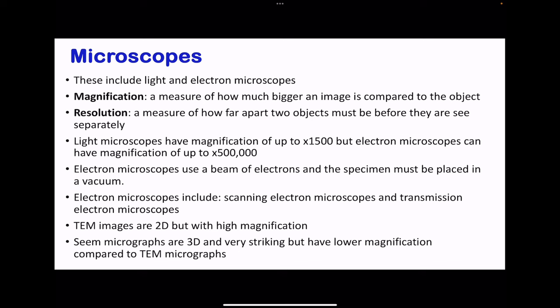The two types of microscopes have different specifications. Light microscopes can magnify an object up to 1,500 times. However, electron microscopes have the capability of magnifying up to 500,000 times. Not all electron microscopes are going to reach this, but there is potential for some. For electron microscopes, they use a beam of electrons while the specimen is placed in a vacuum. So there is a lot of preparation that should occur when samples are being prepared to be used in an electron microscope in comparison to a light microscope.